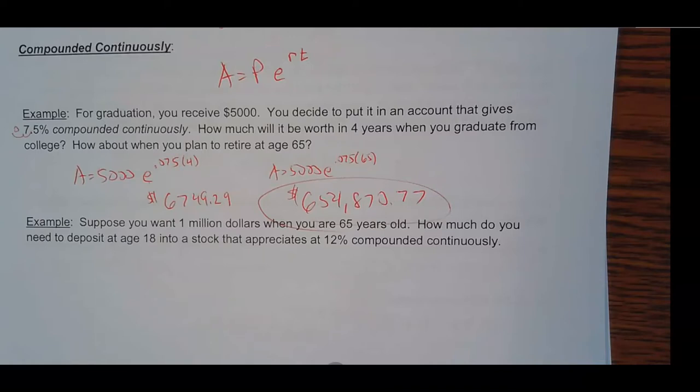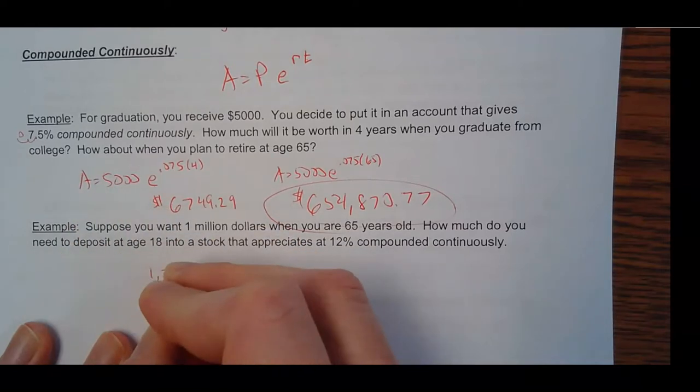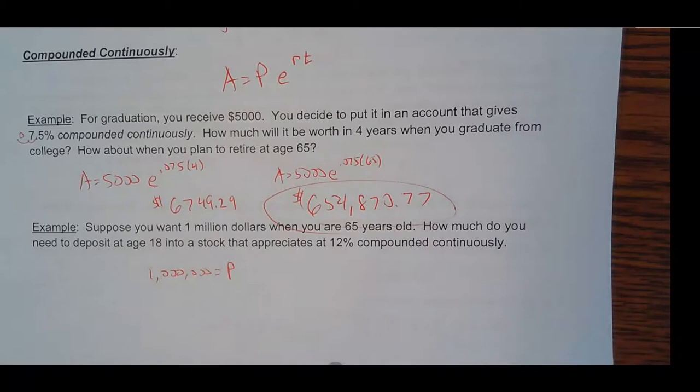Now, suppose you want to have $1 million. So this was good, but I want $1 million. How much do you need to put into a stock that makes $12,000? I'm sorry, 12% compounded continuously. Not a realistic problem because you can't predict that. You know, stock market goes up and down. But my amount and my A, I want it to be a million. Again, I don't know what amount I need to put into my principal.